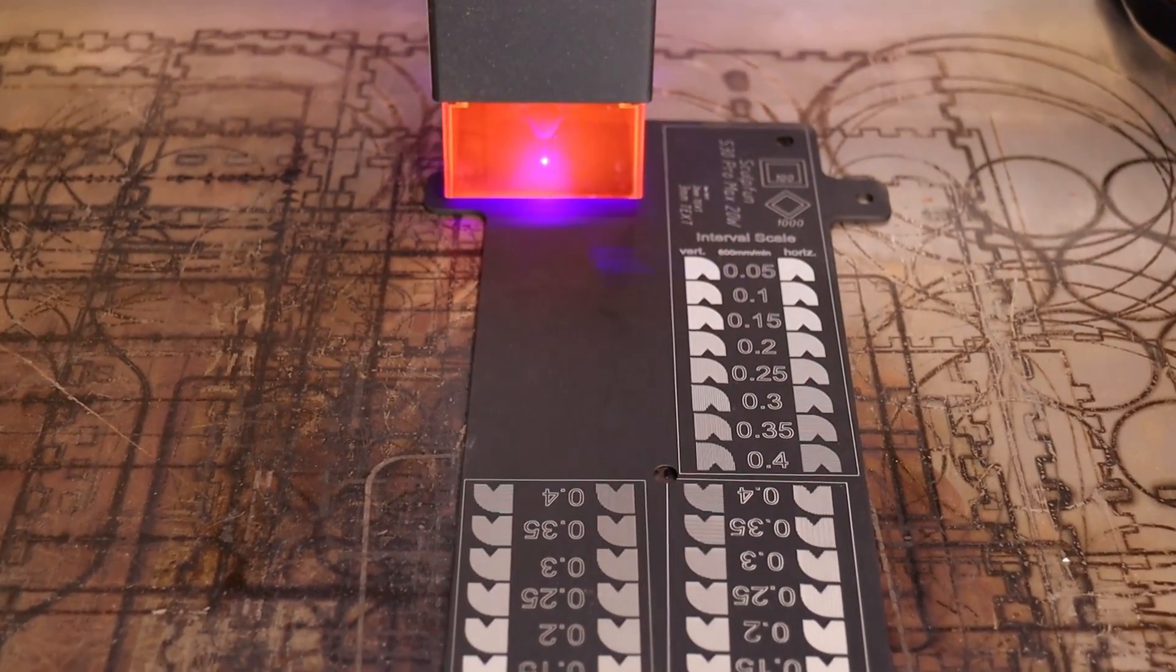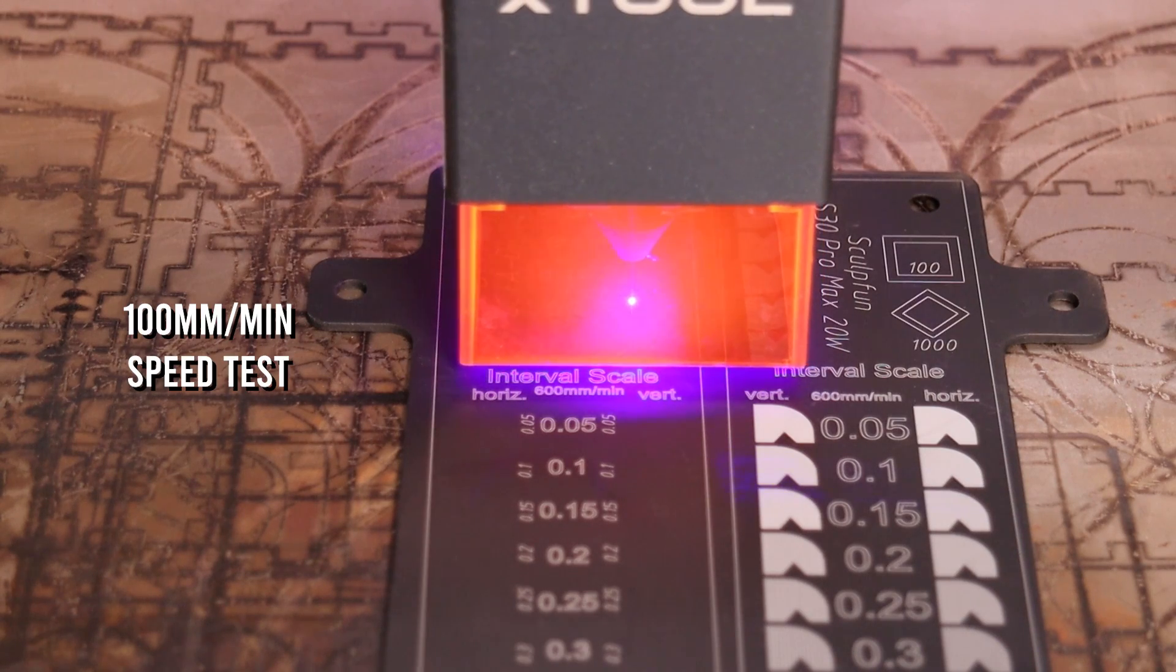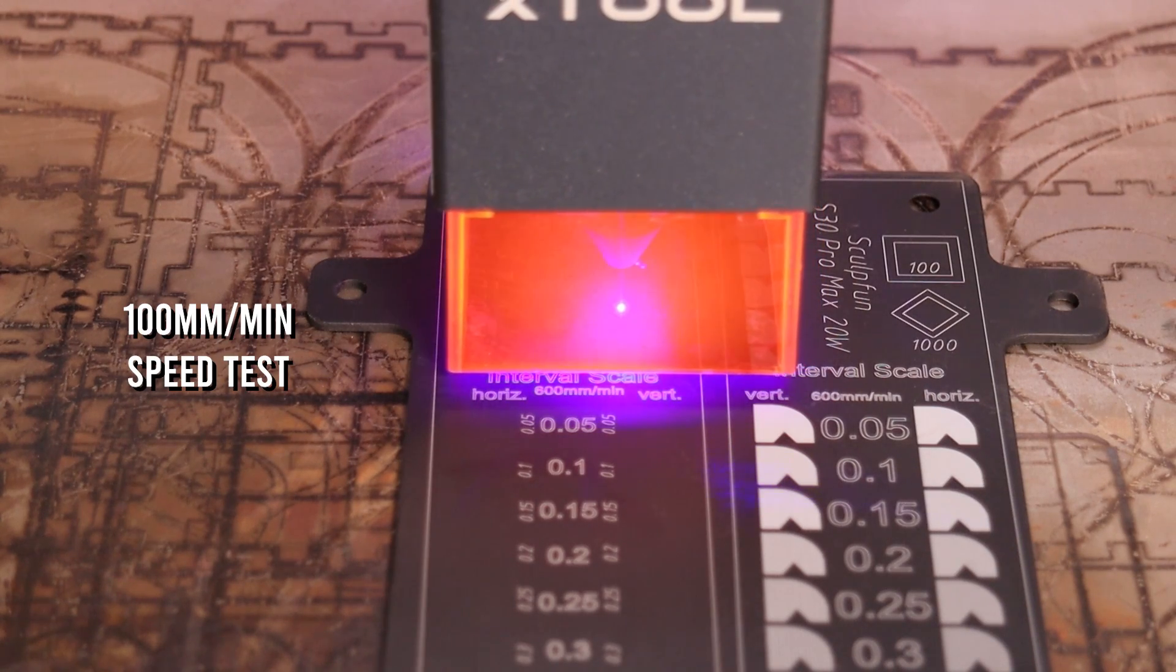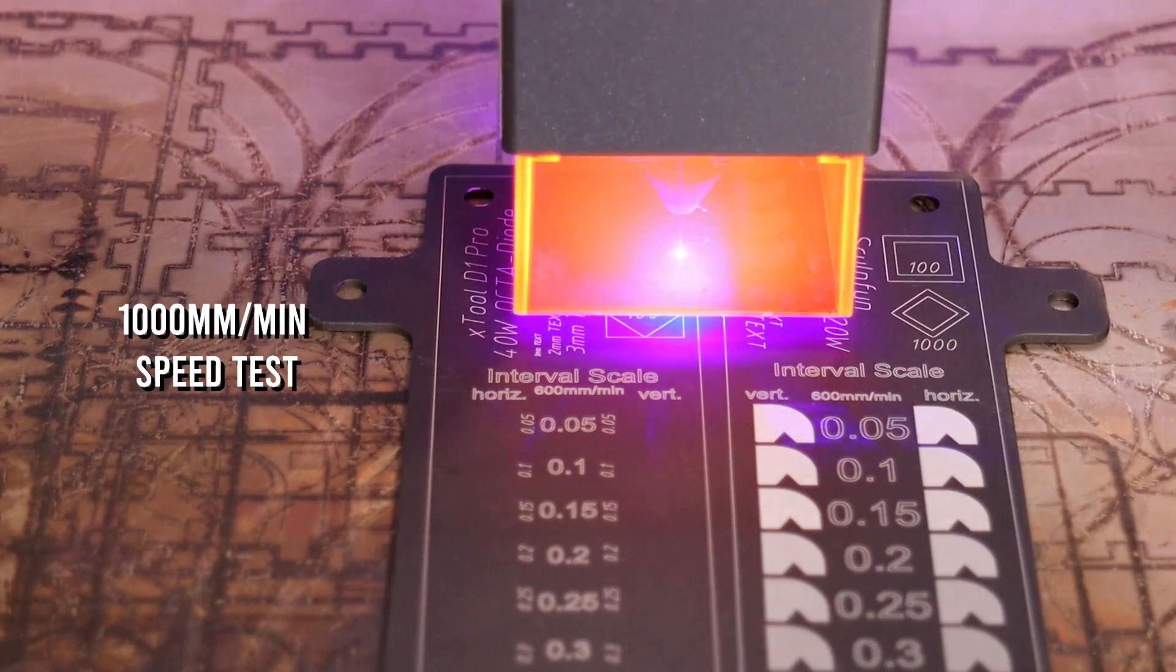Next, I engraved the test pattern on black anodized aluminum. Anodized aluminum produces very crisp and detailed engravings which enable us to measure the laser spot size and evaluate the machine's mechanical stability.